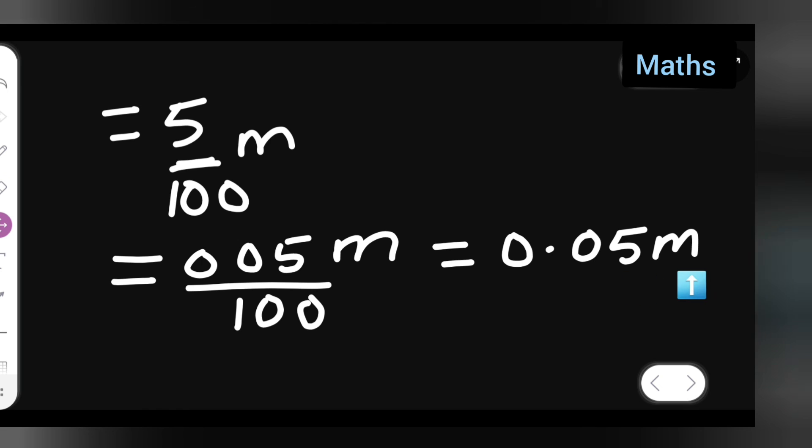Now finally we have converted 5 centimeters into meters. The answer you got is 0.05. I hope you have understood how to convert 5 centimeters into meters. If you have any doubts or queries, you can comment below. Don't forget to like, subscribe, and share with your friends.